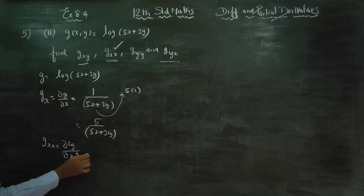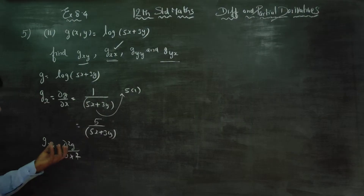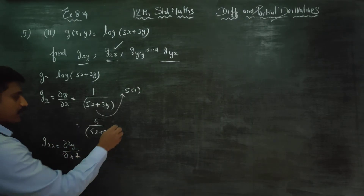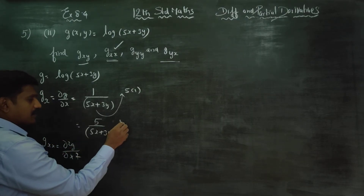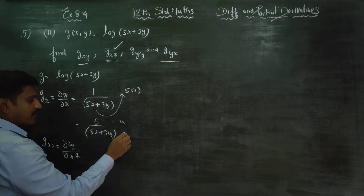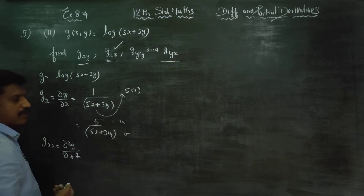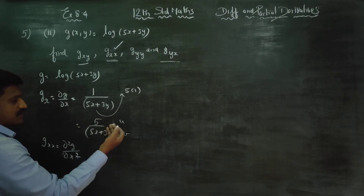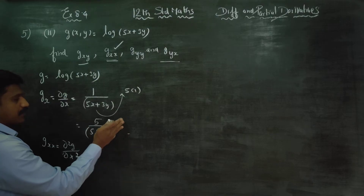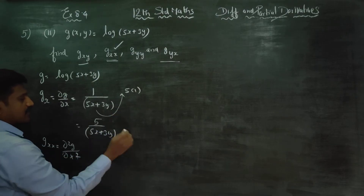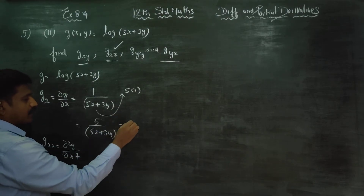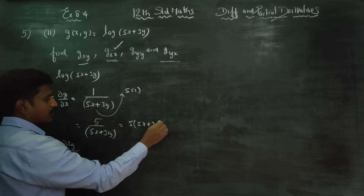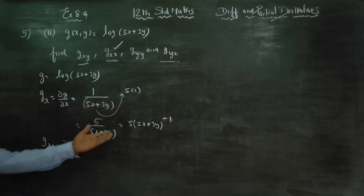Again, you have to differentiate this with respect to x. I will use the power rule rather than the u by v formula — it will be easy. So, 5 by (5x plus 3y) written as power minus 1.